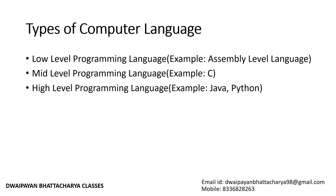In high-level programming languages, you can give instructions to a computer in words you understand, like 'print'. This kind of syntax is used to instruct the computer. However, it is then converted — after compilation and processing, the computer converts it into 0s and 1s and processes it to give you the desired output result.